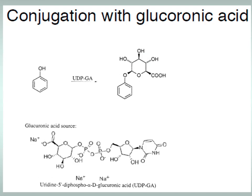The pathways of biotransformation of toxic substances are mainly divided into two phases. Phase one includes: oxidation, reduction, hydrolysis, demethylation, methylation, deamination, and others. Phase two includes: conjugation with glucuronic acid and other acids.